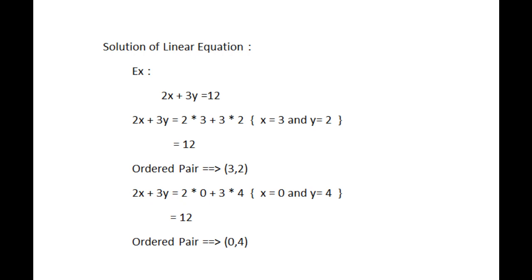Similarly, 0 comma 4 is a solution. Substitute x equal to 0 and y equal to 4. Therefore, 2 into 0 plus 3 into 4 equal to 12. Therefore, 0 comma 4 is another solution for 2x plus 3y equal to 12.